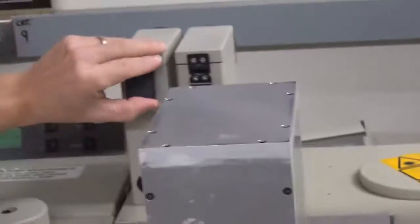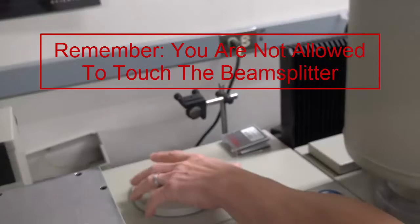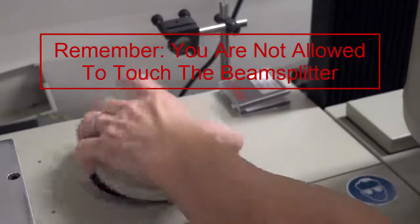The second option is to vent the system and check the beam splitter under the round lid. You vent the system by pushing the down arrow until vent optics is selected and then push enter. Remember, you are never allowed to touch the beam splitter, so make sure you are only looking under the round lid and not touching anything.